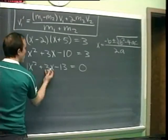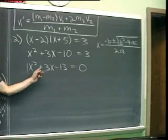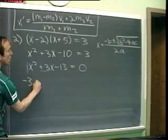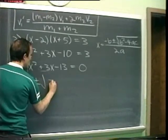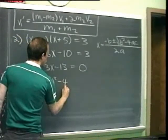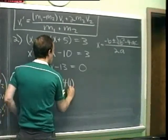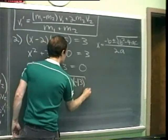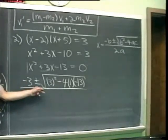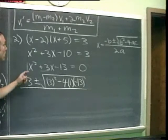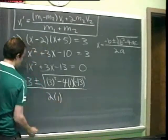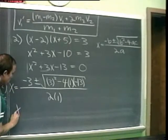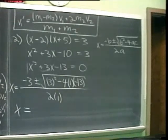In our case, minus B — our B is 3. Watch out: if this says X squared minus 3X, the minus is part of B. But our case is plus, so we've got minus 3 plus or minus the square root of B squared — that's 3 squared — minus 4 times A, which is 1 in our case, times C, which is minus 13. All divided by 2A, which is 2 times 1. We should get two answers: one for the plus sign and one for the minus sign.